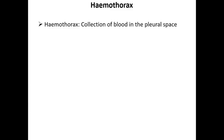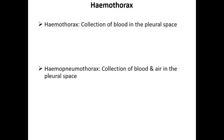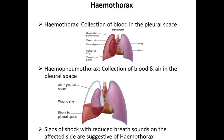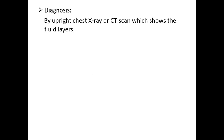Hemothorax is blood accumulation inside the pleural space. When both blood and air accumulate, it is called hemopneumothorax. Diagnosis is by chest x-ray — showing fluid in hemothorax, air in pneumothorax, and air-fluid levels in hemopneumothorax — or CT scan of the chest. Management involves inserting a chest drain or intercostal tube to drain the excess fluid from the pleural space.